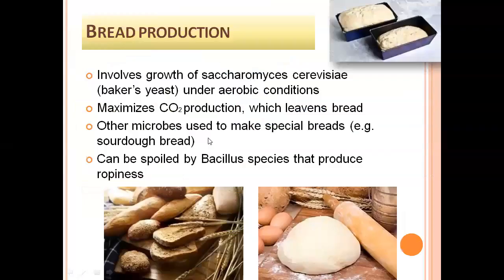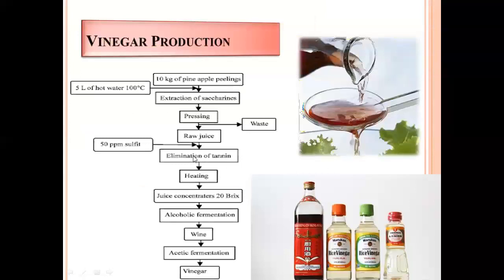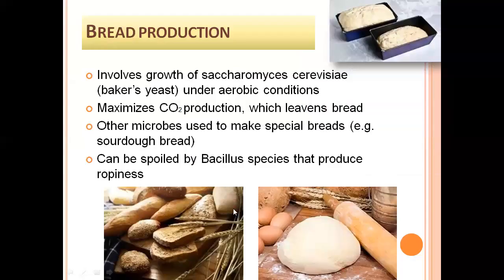Another beneficial role of microorganisms is the production of bread, which involves the growth of Saccharomyces cerevisiae, also called baker's yeast. This baker's yeast produces carbon dioxide that leavens the bread. Other microbes can be used to make special breads, for example sourdough bread. Bread can be spoiled by Bacillus species that produce ropiness in the bread.